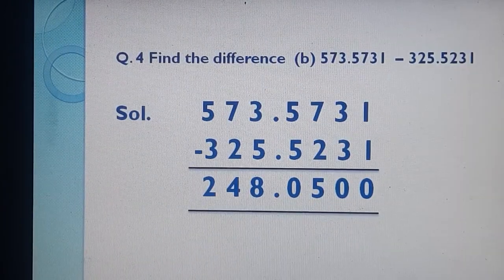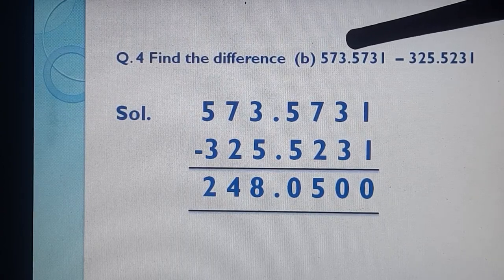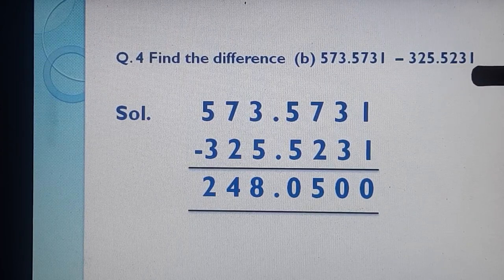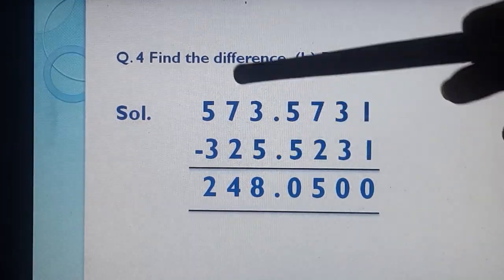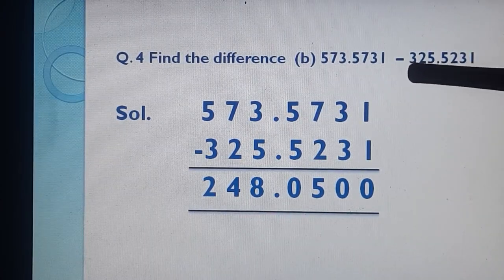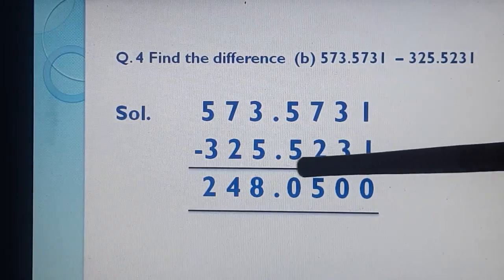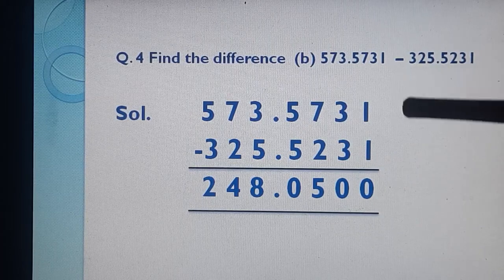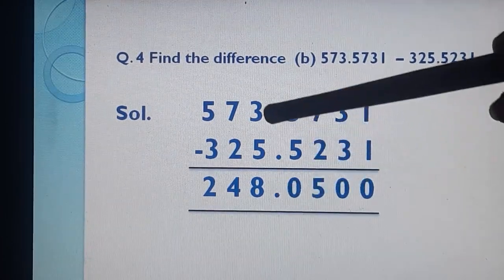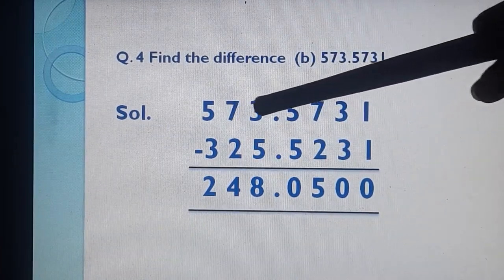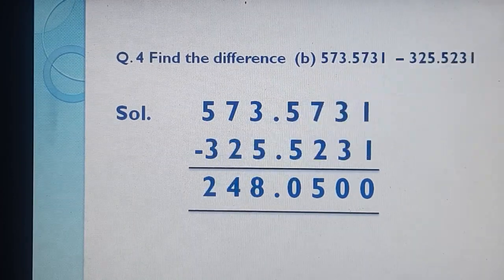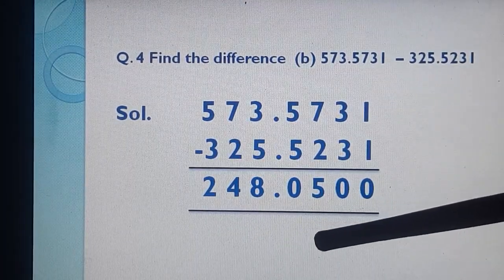If you got the correct answer, very good; if not, do correction work. Part B: 573.5731 − 325.5231. Write carefully — 3 is at the hundreds place. Subtracting digit by digit: 1−1=0, 3−3=0, 7−2=5, 5−5=0. Put decimal. Then 3−5 is not possible, so borrow: 13−5=8, 6 becomes 6−2=4, and 5−3=2. Answer: 248.0500.